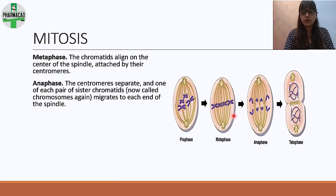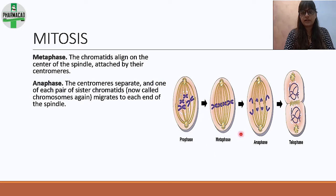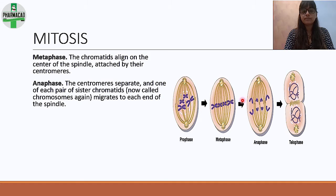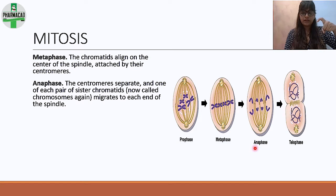In metaphase, the chromatids align at the center of the spindle, attached by their centromeres. You can see this in the metaphase diagram — they are aligned at the middle.